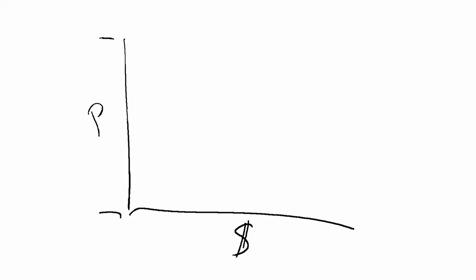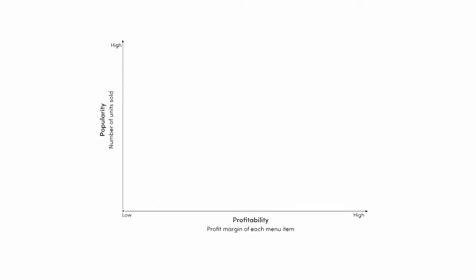How much do our guests order this item? How much do they like it? On the other side, we're going to put profitability — also high to low. Then we're going to take every single one of those menu items and pop them on this grid.